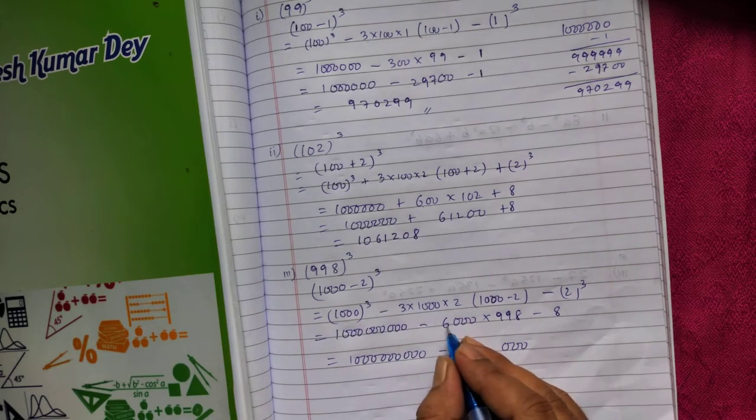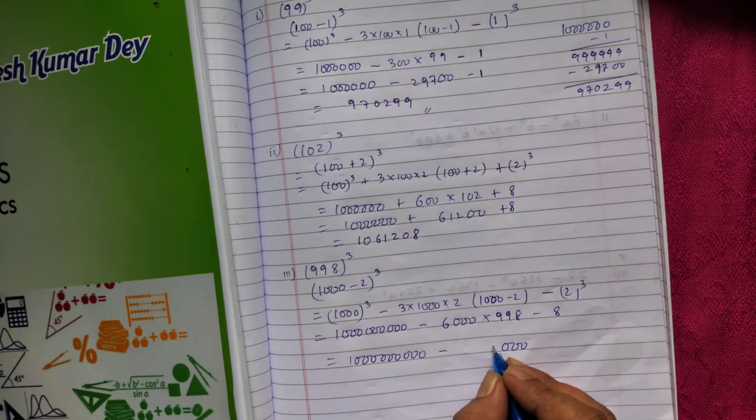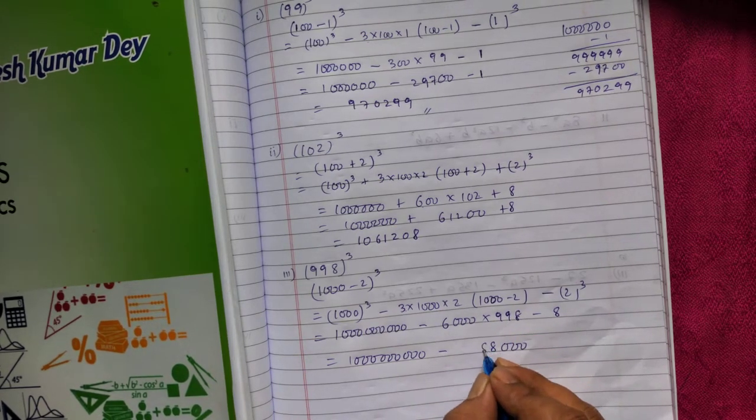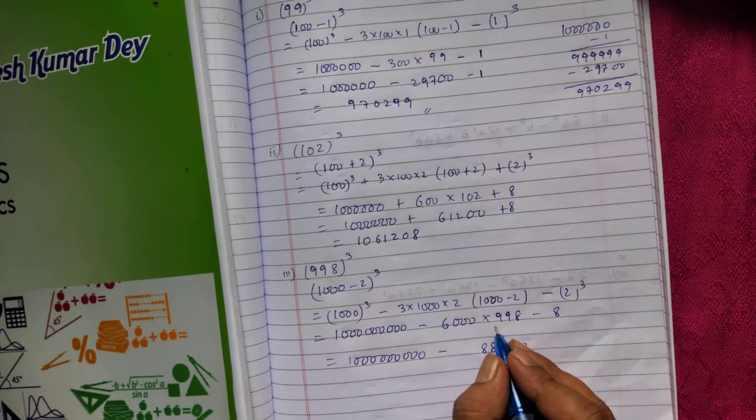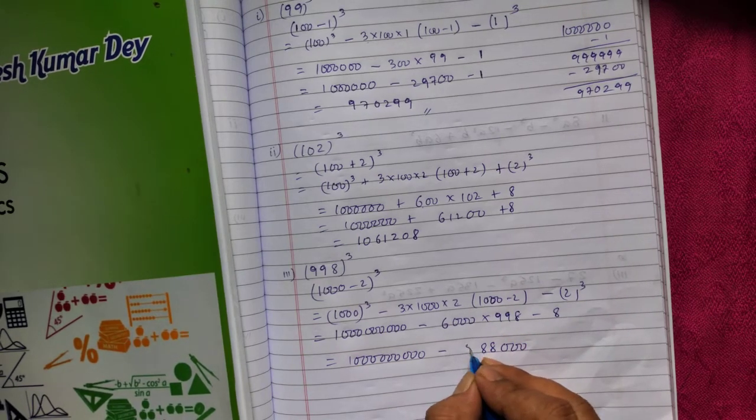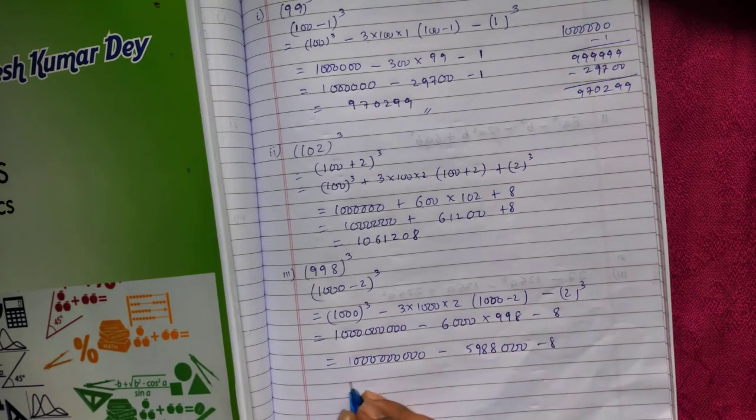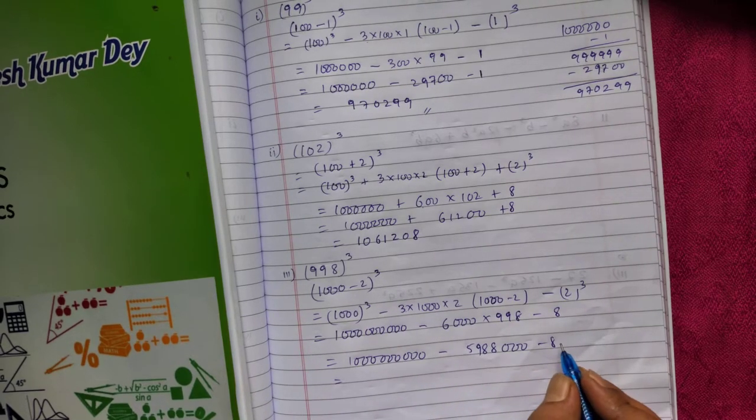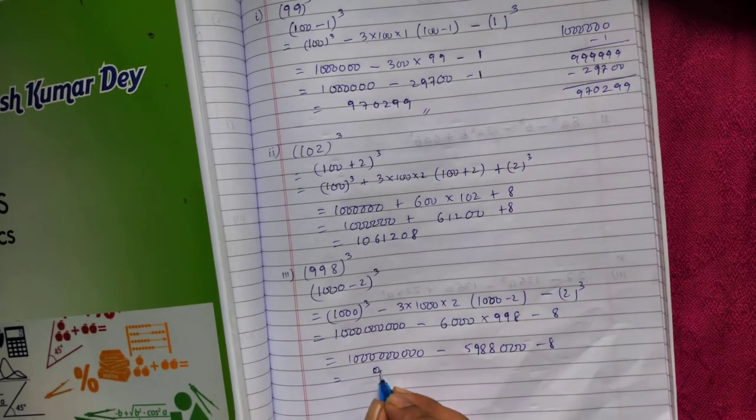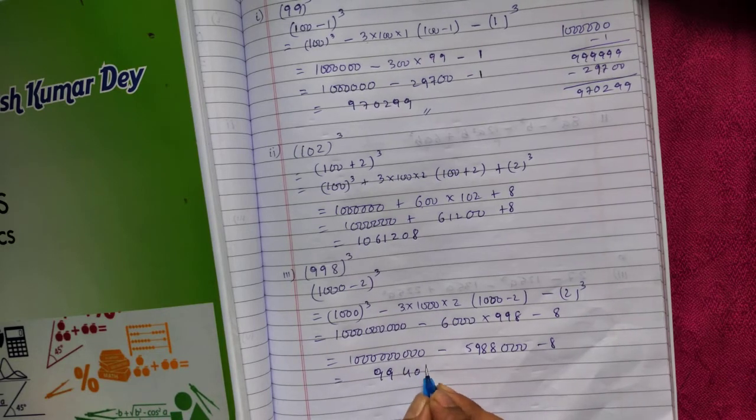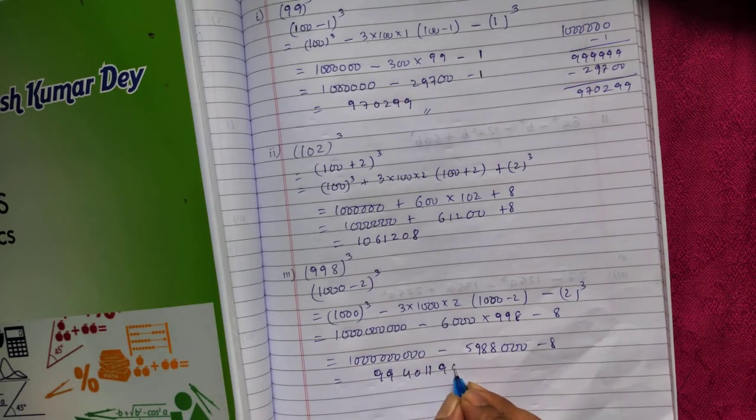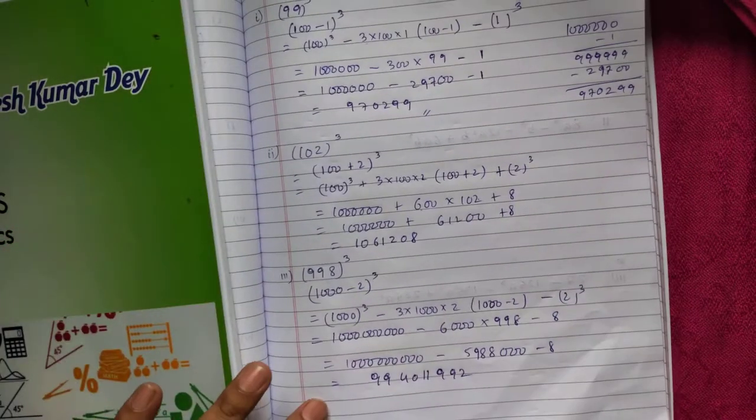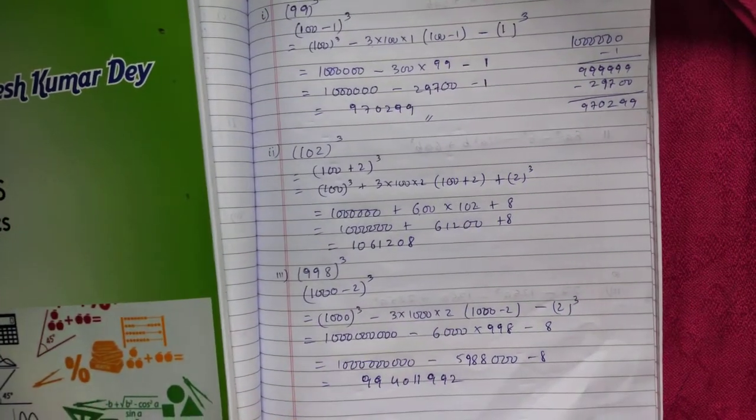You multiply: 6 times 8 is 48, 6 times 9 is 54 plus 5 is 59, and so on. You get 5988000. Minus 8, so you can minus this and you'll get 994011992. You can pause the video to write the solution. Thank you.